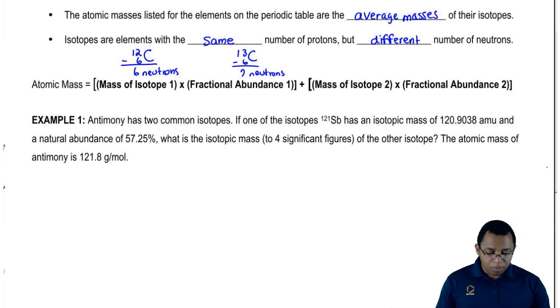Fractional abundance is super simple. Let's say I tell you you have 25% of isotope 1. Its fractional abundance would just be that percentage divided by 100. Its percent abundance is 25%, but its fractional abundance is 25% divided by 100 or 0.25.